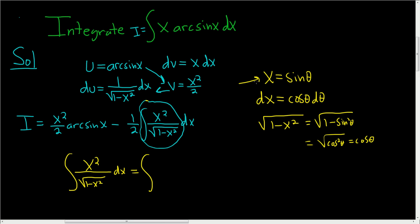This is equal to the integral of, we said x was sine theta, so we get x squared, so sine squared theta. And we have a division sign, and then the denominator here is cosine theta. And dx is cosine theta d theta, so this is cosine theta d theta.